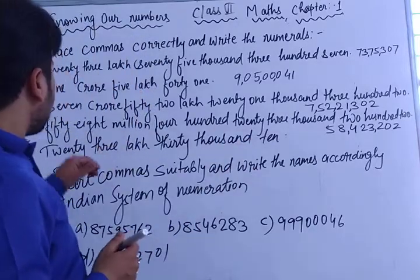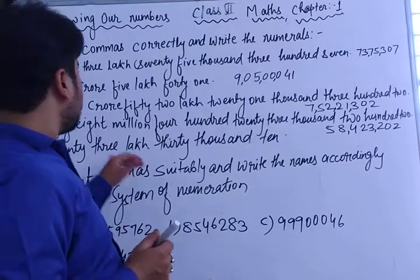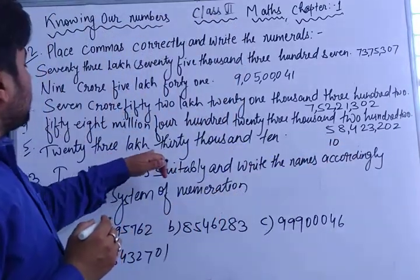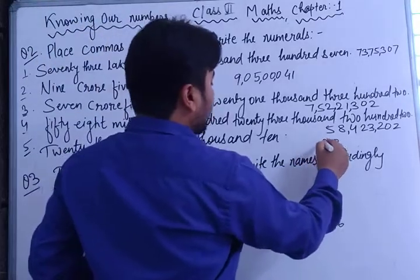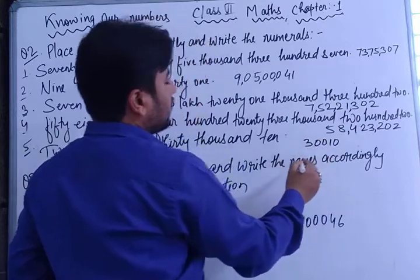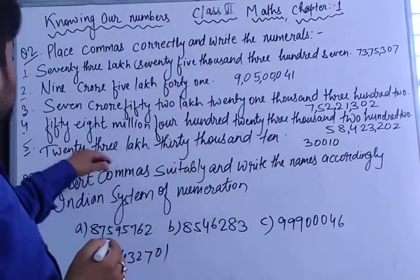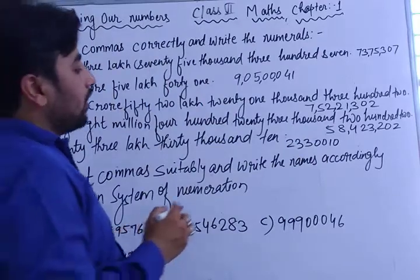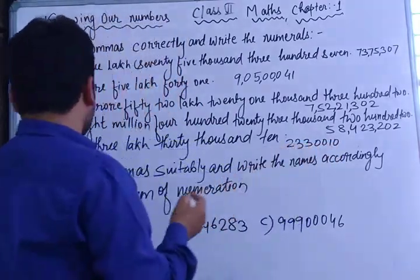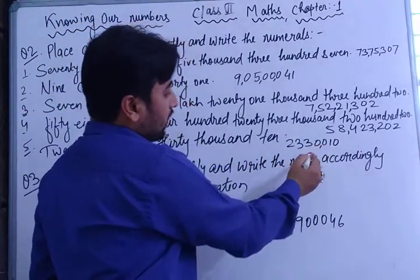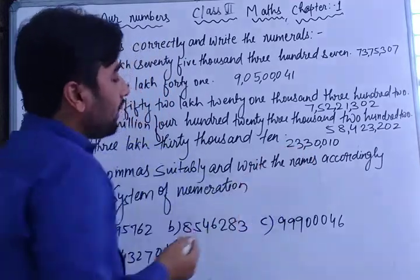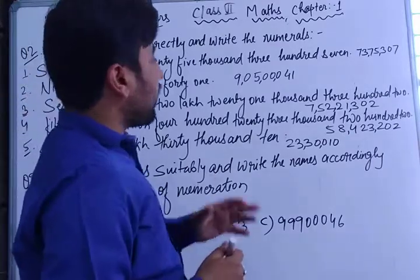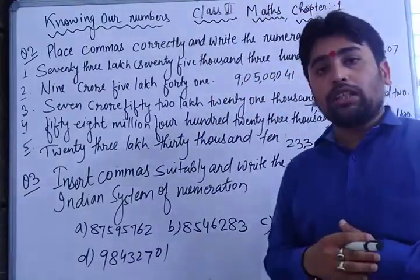The last part of question 2 is twenty-three lakh thirty thousand ten. First write ten, then thirty thousand — units, tens, hundreds, thousands, ten thousands — then twenty-three lakh. In the Indian system, first comma after three digits, then after two digits, then two digits. So twenty-three lakh thirty thousand ten is written as 23,30,010.